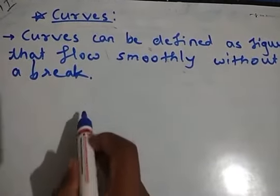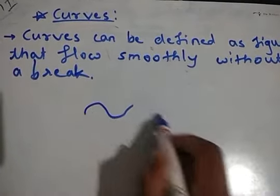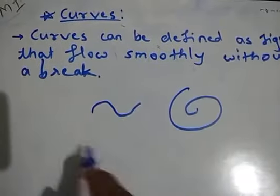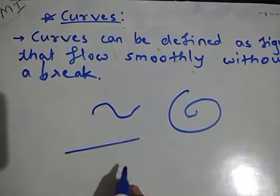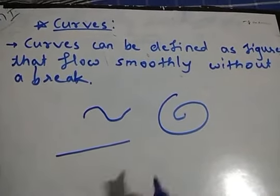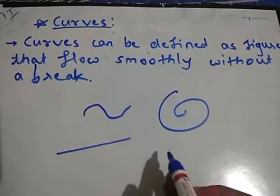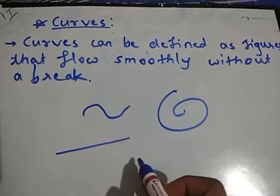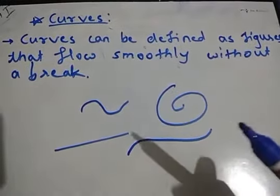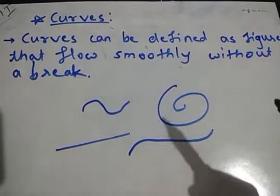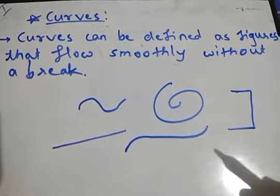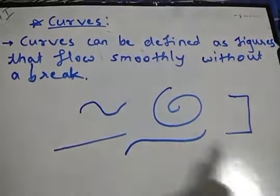Students, usually shapes like this we call as curves. But in mathematics, a straight line is also a curve. To get a curve, we just have to take a pen or pencil and draw a shape without lifting the tip of the pen or pencil. So these are all the curves.